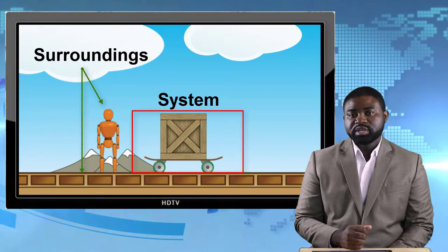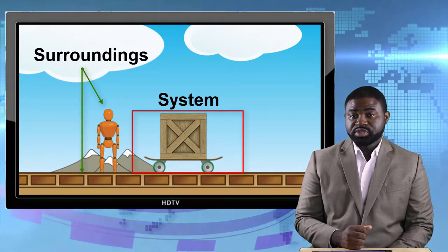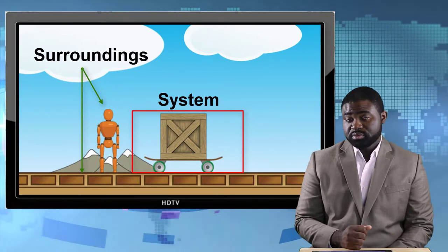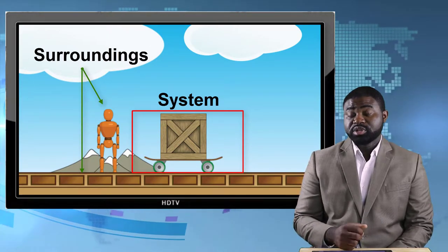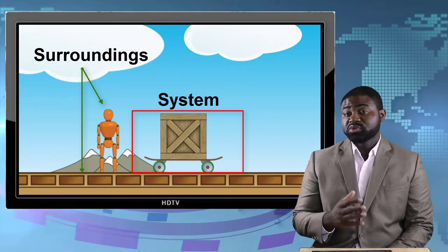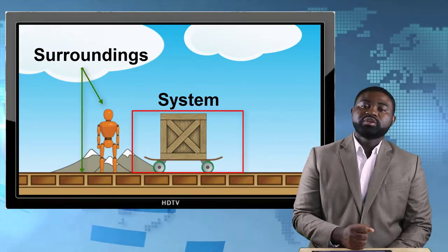Suppose we place a book on a table and we are interested in the motion of the book. Then the table, the earth, and you constitute the surroundings, and the book will be our system.